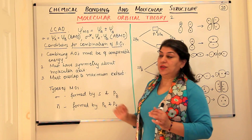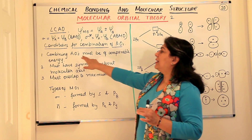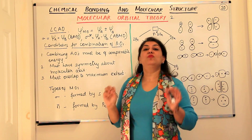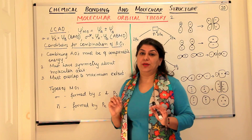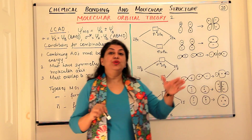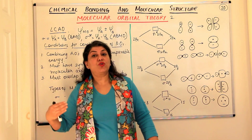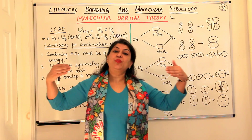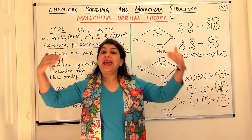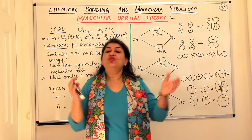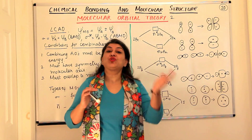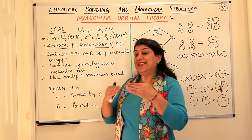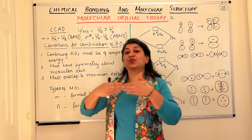So what are the conditions required for this linear combination of atomic orbitals? There are three conditions. The first is that the combining atomic orbitals must have comparable or almost equal energies. I told you in the previous video that 1s orbital combines with 1s, 2s combines with 2s, 2px combines with 2px, 2py with 2py, and 2pz with 2pz.